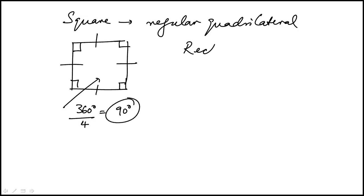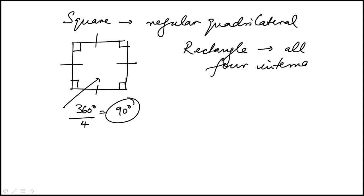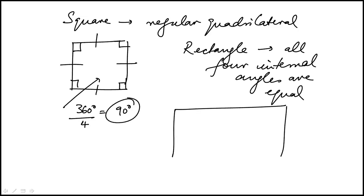For a rectangle, all four internal angles are also equal, but the two pairs of sides are different lengths. In general, for a rectangle, the opposite sides are equal. The internal angles are all 90 degrees, and the opposite sides are equal to each other.